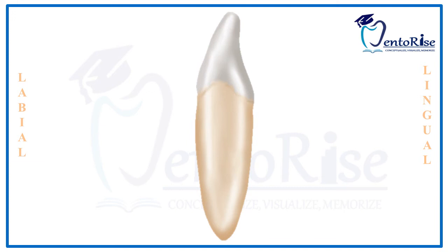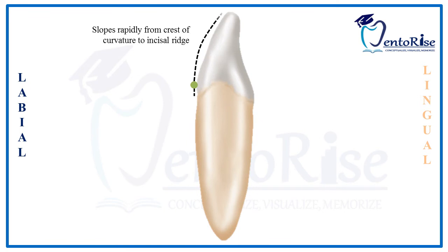Considering the outlines of the tooth as observed from the mesial aspect: the crest of curvature on the labial outline is present in the cervical third. Starting from the cervical line to the crest of curvature, the line is relatively straight; from the crest of curvature it slopes till the incisal ridge. On the lingual outline, starting from the cervical line, we first observe a smooth convexity of the cingulum.